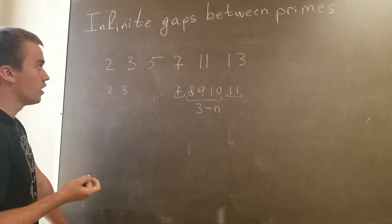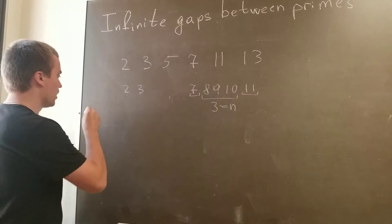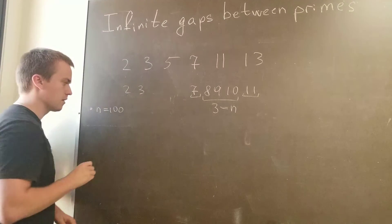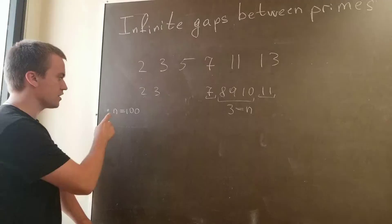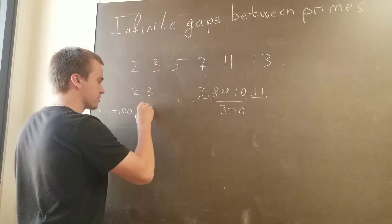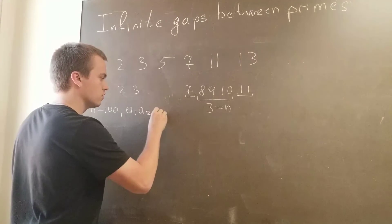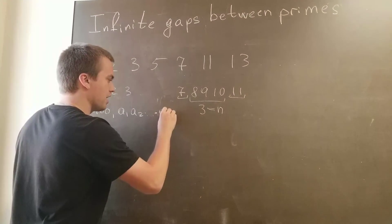So my question is, for example, if I take n equal to 100, can I find such consecutive sequence of numbers a_1, a_2, up to a_100?